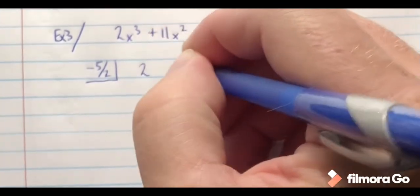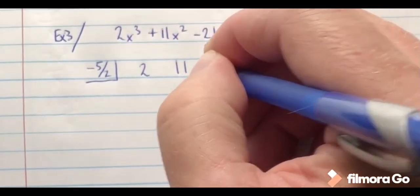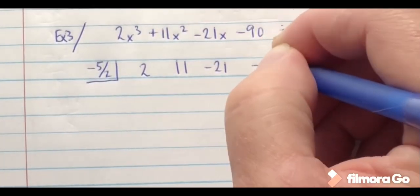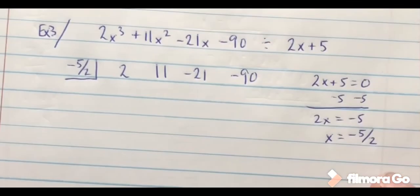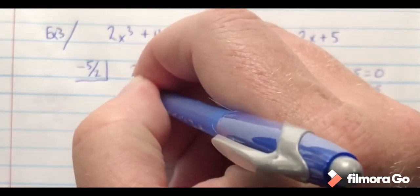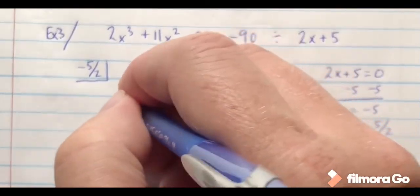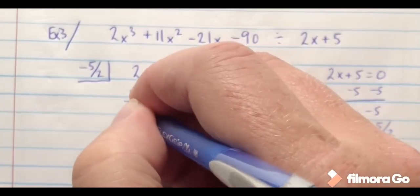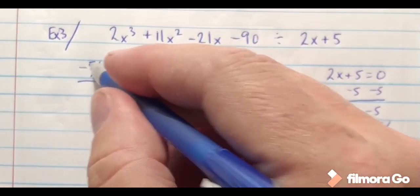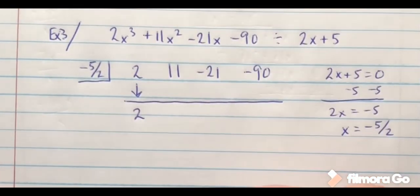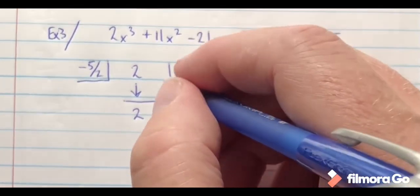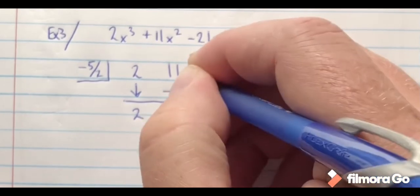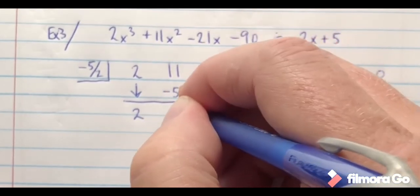I'm going to go ahead and list my coefficients: 2, 11, negative 21, and negative 90. Okay, I bring my 2 straight down. So 2, well negative 5 halves times 2, that's going to be negative 5.